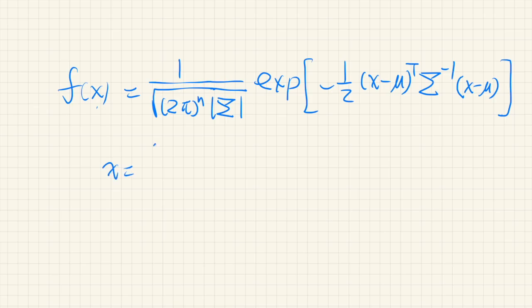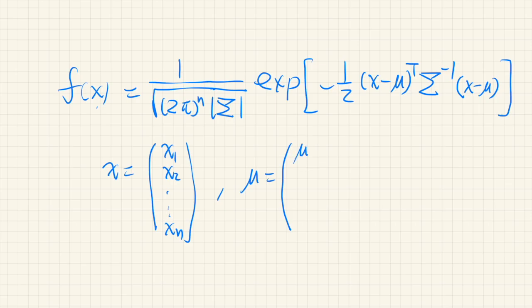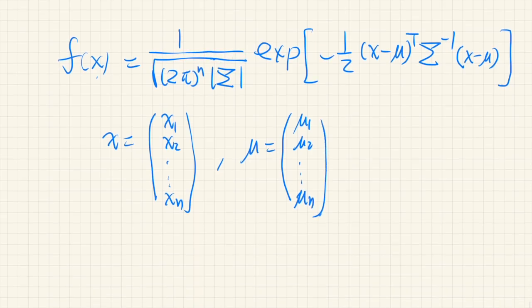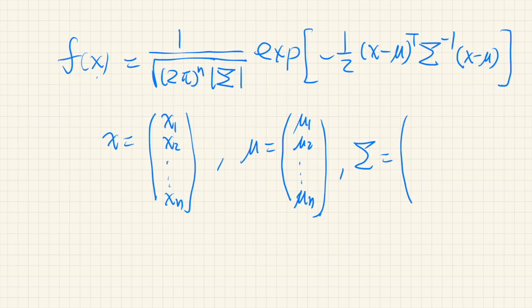So x is an n-dimensional vector from x1 to x2 to xn, and mu is another vector: mu1, mu2, and mu_n. And sigma is a matrix. The elements represent covariance, so we just write sigma.